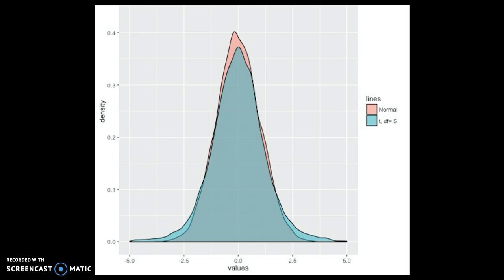I've plotted the density of both distributions on the same chart so you can see what it is. This first chart here is a comparison of the standard normal distribution and the central T distribution with just 5 degrees of freedom. You can see that the normal distribution here in pink has a higher peak, and the T distribution has fatter tails. You can see it's more spread out.